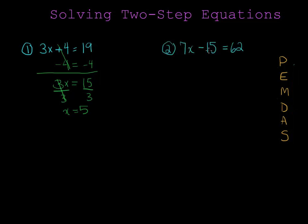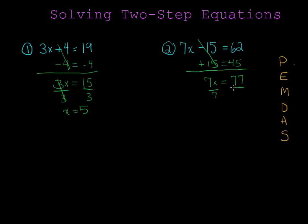Let's do another problem. This time I will get rid of the minus 15 by adding 15 because addition is the opposite of subtraction. I'll do that to both sides because whatever you do to one side of your equation you must do to the other. Now I'm left with 7x is equal to 62 plus 15 which is 77. To get rid of the multiplication by 7 I'll divide both sides by 7, shown using a fraction bar, and I'm left with x is equal to 11. Notice that in both cases my answer to the equation is an equation, so you should always give your answer in the correct form.